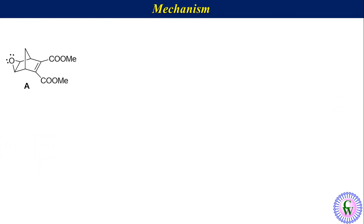This is compound A. For better understanding, let's label the carbons of the skeleton as 1, 2, 3, 4, 5, 6, and 7.